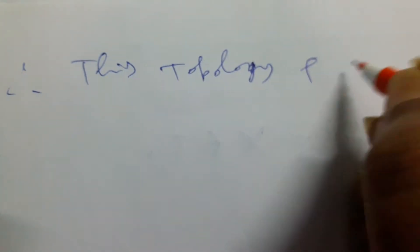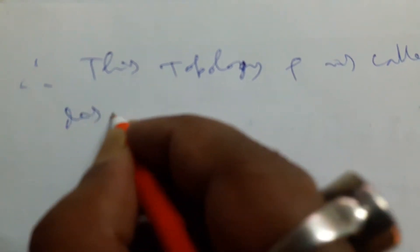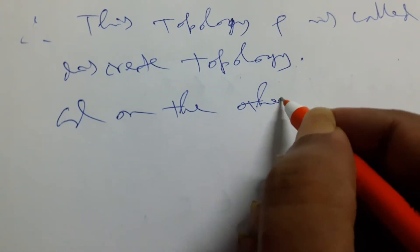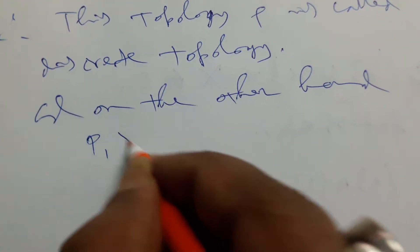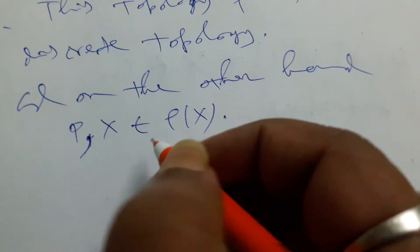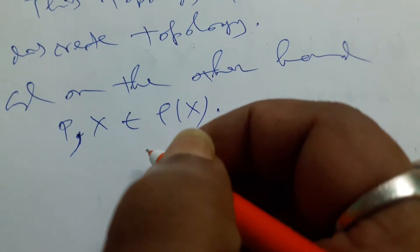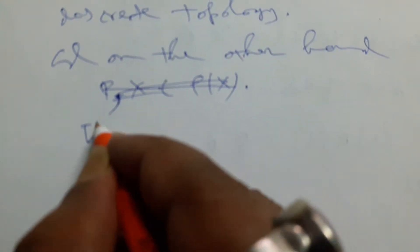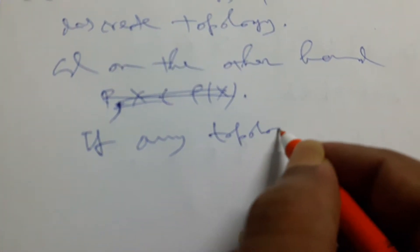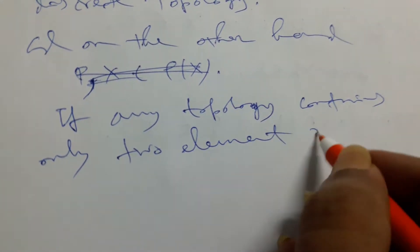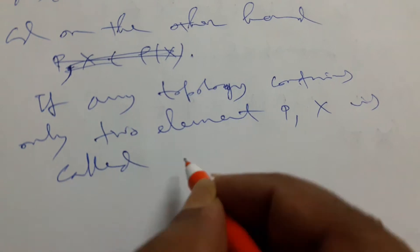This topology ρ is called discrete topology. On the other hand, if φ and X belongs to ρ(X), and any topology contains only two elements φ and X, it is called indiscrete topology.